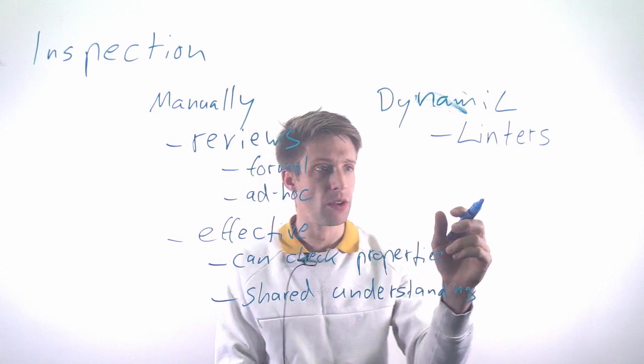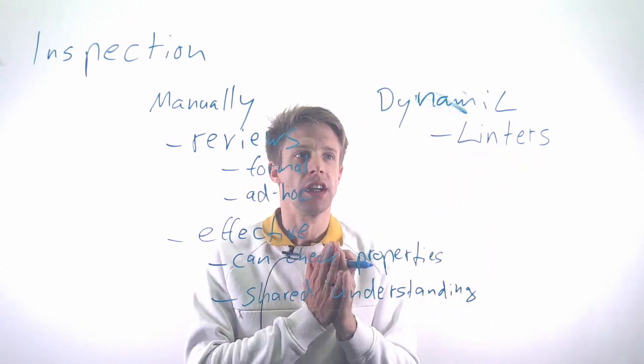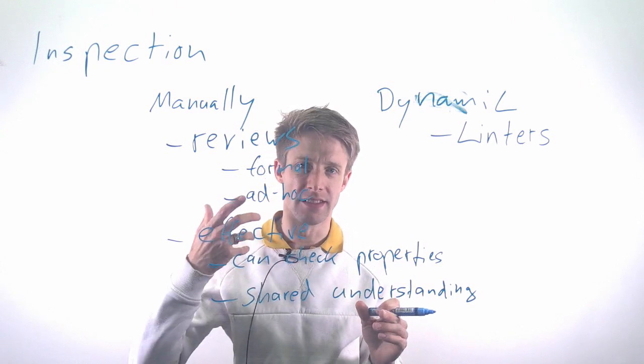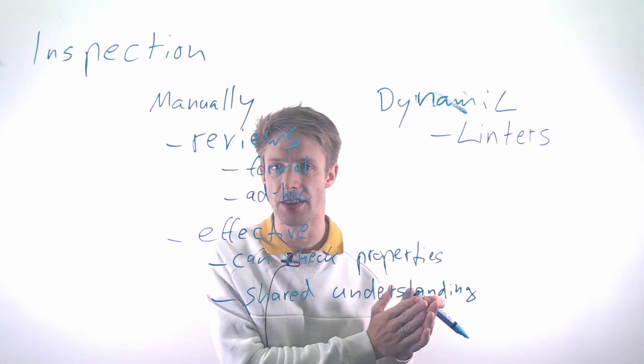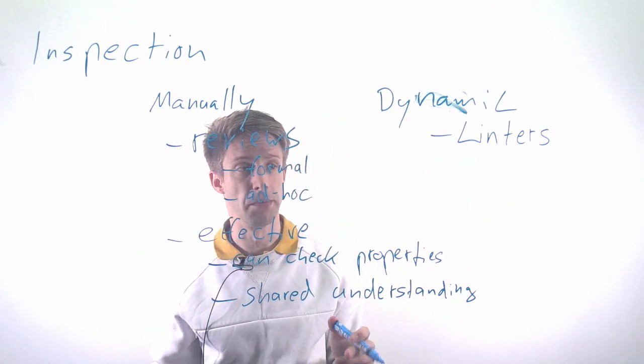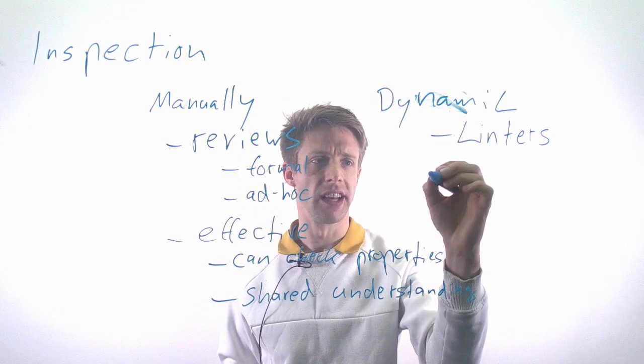The tools nowadays are so good that they can also detect what is called a bad smell—code fragments that are written in a suboptimal way and are known to cause problems later. These tools can highlight them and say you cannot commit this until you have fixed it. That's a very effective thing.